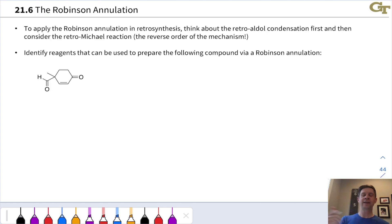Now let's unpack this a little bit and see how this corresponds to a product of a Robinson annulation. So in reverse, let's think about the aldol condensation first, and the retro-aldol condensation is really what we want to think through here, working backwards from the product to the starting material. We can notice, for example, that there's an alpha-beta unsaturated ketone built into this structure.